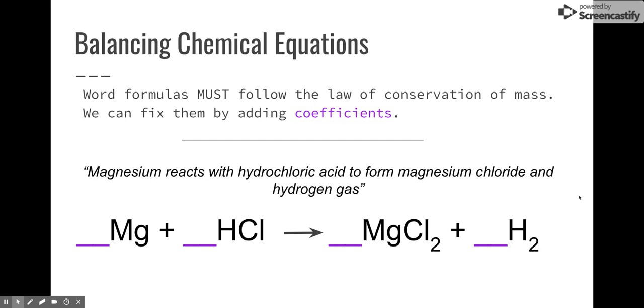Balancing chemical equations is something we need to know how to do. It's not usually done for us when we write word formulas. For example, the word formula below: magnesium reacts with hydrochloric acid to form magnesium chloride and hydrogen gas. That problem doesn't really tell us anything about how much magnesium and how much hydrochloric acid we react and how much magnesium chloride or how much hydrogen we get. We have to fix them by adding coefficients.